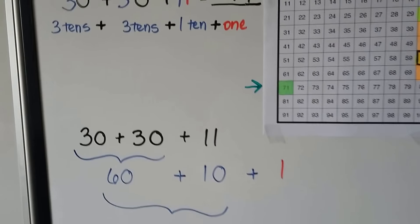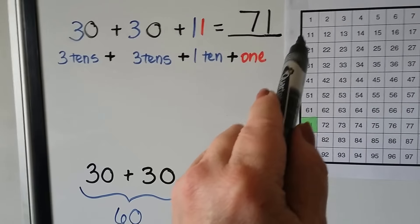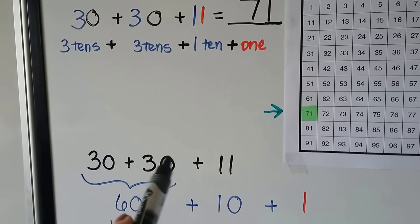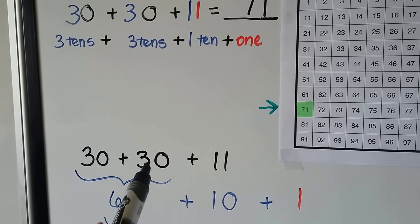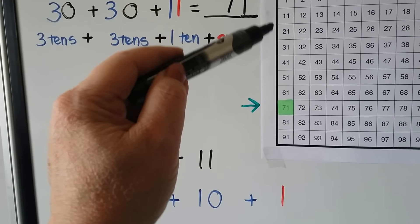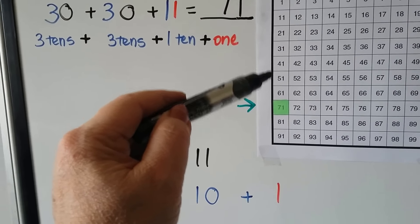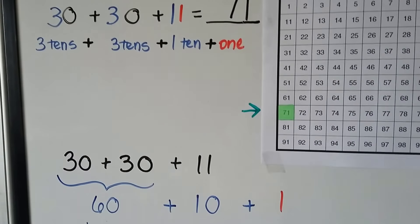How else could we have done it? We could have started at the 11 and added 3 tens and 3 tens. 1, 2, 3. 1, 2, 3. 71.